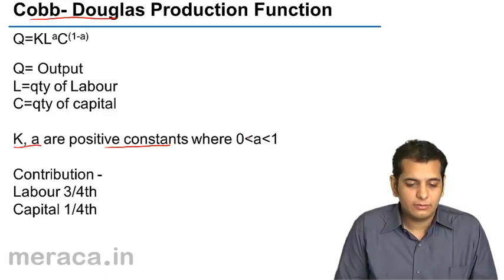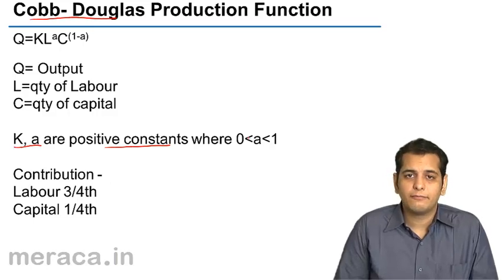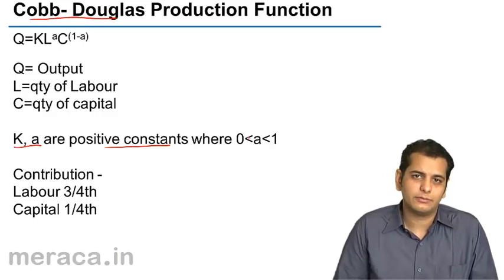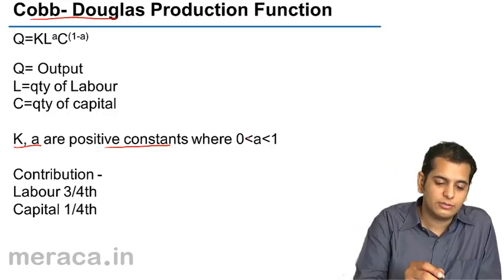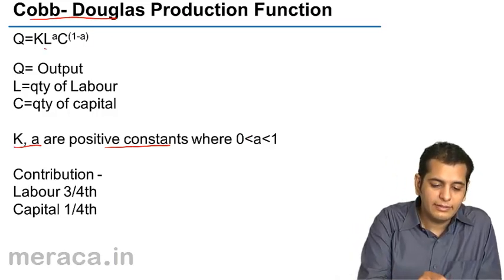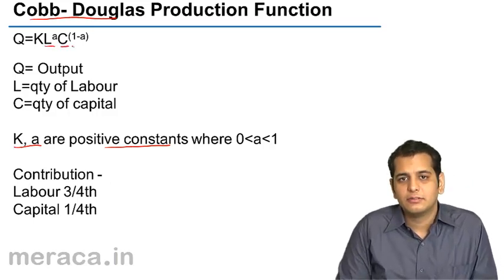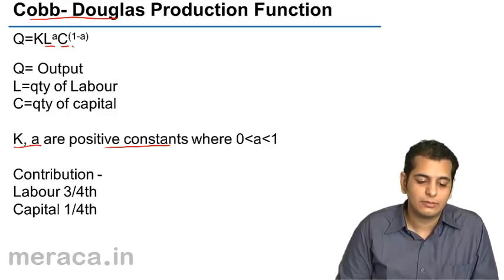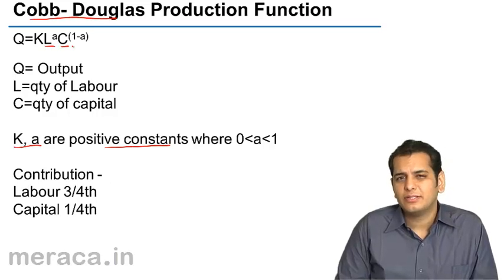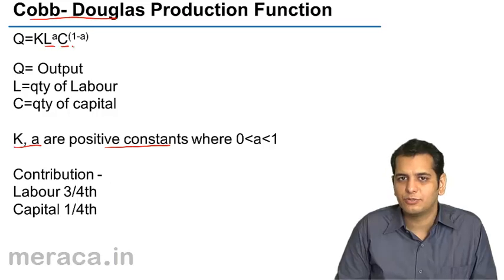They gave their production function. This production function is however with the view of only short run. It is applicable only in short run because they have considered only two factors of production: labour and capital, where generally labour is considered to be variable in short run and capital is considered to be fixed.